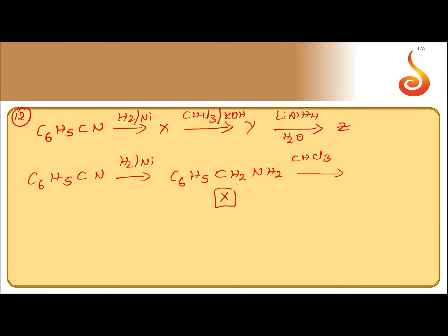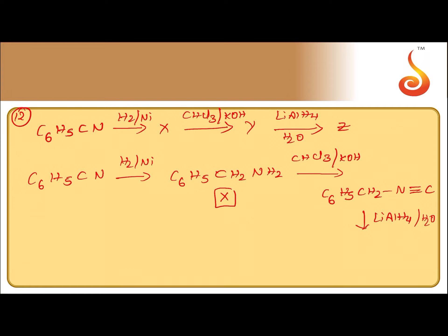This X, when treated with chloroform and potassium hydroxide — that means carbylamine reaction — will give isocyanide. So Y is isocyanide: C6H5CH2N≡C.